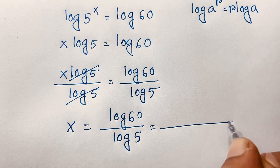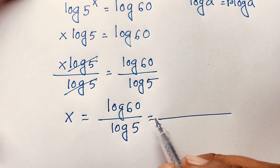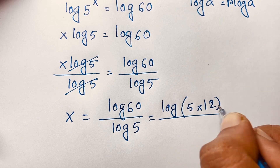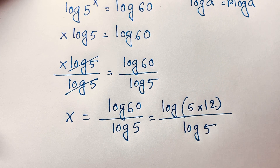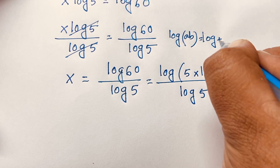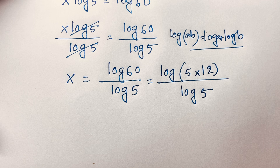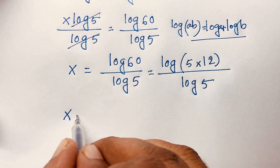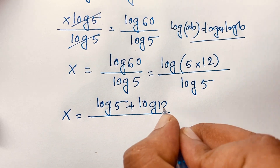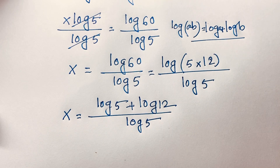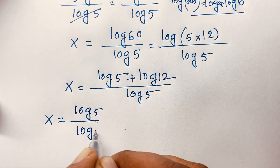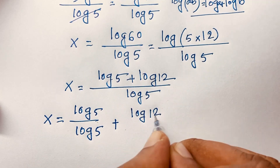Here is log 60. One way to write 60 will be 5 times 12. So if I evaluate this expression, it will be log(5 times 12) over log 5. Using the log product rule — log(a·b) equals log a plus log b — I can see this expression: x is equal to (log 5 plus log 12) over log 5. If I separate this fraction, it will be log 5 over log 5 plus log 12 over log 5.